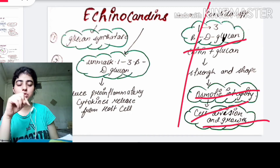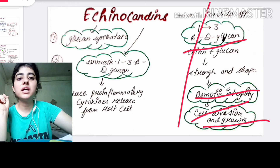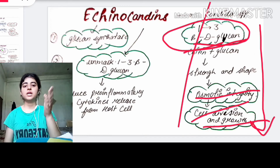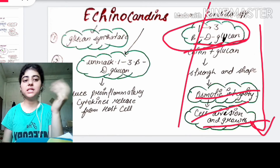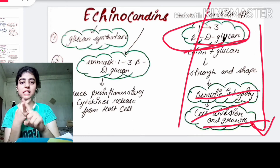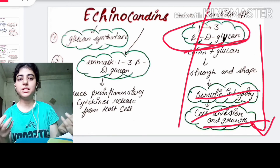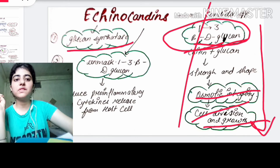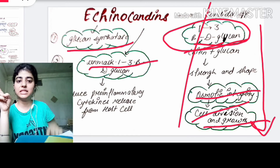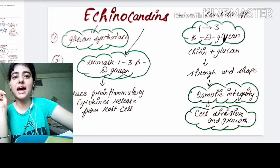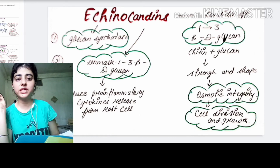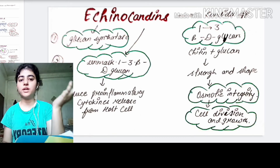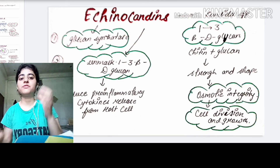Echinocandins inhibit the synthesis of 1,3-beta-D-glucan, disrupting this whole mechanism. First, it inhibits the synthesis via glucan synthetase inhibition. It also unmasks the 1,3-beta-D-glucan. Finally, it induces pro-inflammatory cytokine release from the host cell. These cytokines further disrupt the fungal cell, resulting in no cell division and no cell growth.